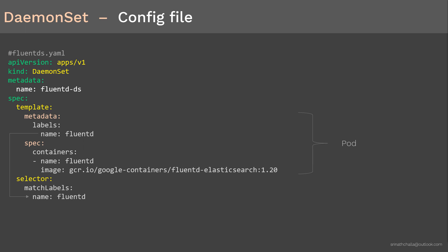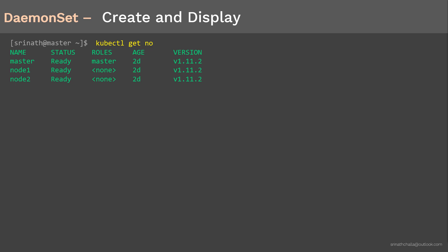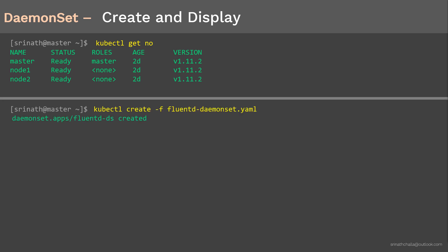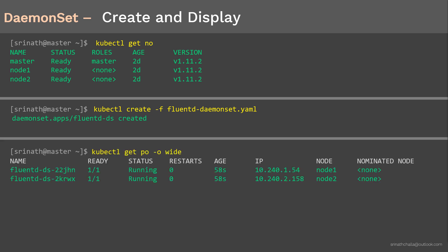Let's create the DaemonSet. First, let's display the number of nodes inside the cluster by running kubectl get nodes. There are three nodes: one master and two worker nodes. Now let's deploy the DaemonSet controller we created previously — the output confirms it was created successfully. Next, let's validate the DaemonSet deployment by displaying the pods created and the nodes they are running on. There are two pods running on node 1 and node 2, with only one pod per node.